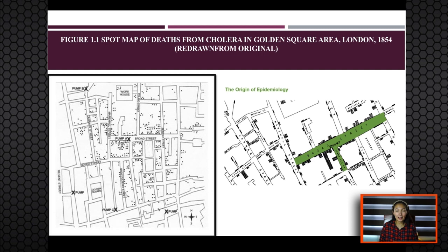He however noted that in an area two blocks away from the water pump, there were no recorded cases of cholera. Further investigation revealed that in that area there was a brewery with a deep well from which the brewery employees got their water. He also found out that brewery employees received daily portions of malt beer, so access to the uncontaminated water would explain why none of the brewery employees contracted cholera.